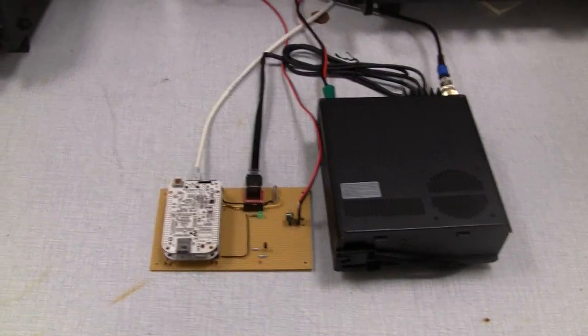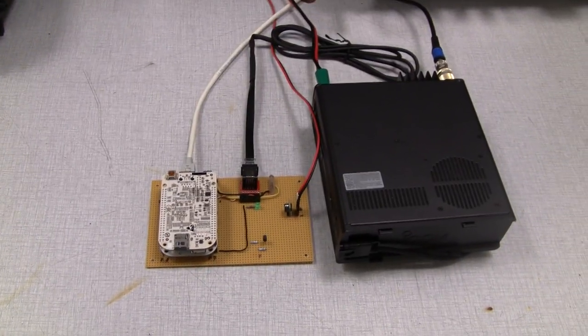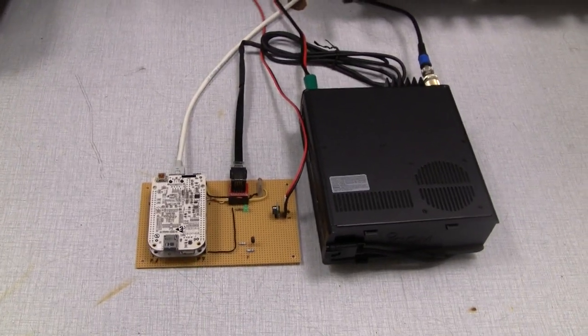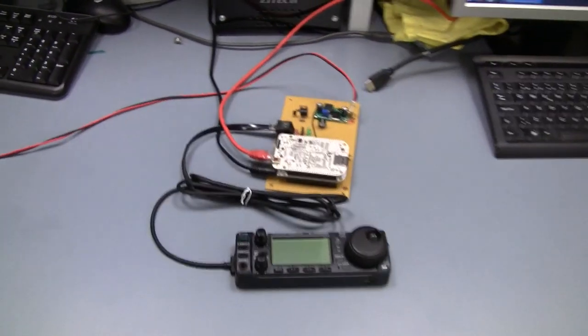And over here on the other table, I have the radio itself connected to the other beagle bone using the second half of the remote cable. And this beagle bone is also connected to the network. And this is the server, and the one connected to the front panel is the client.